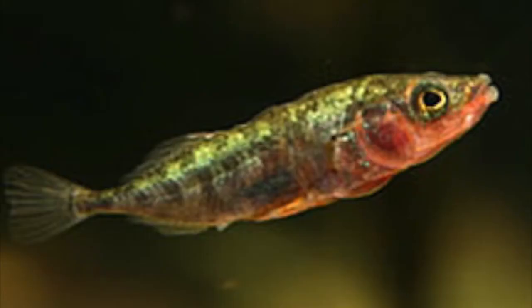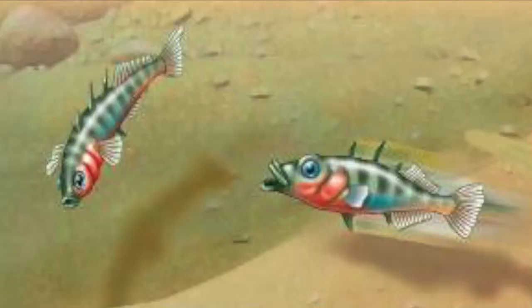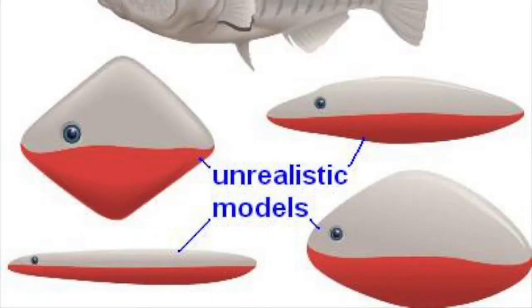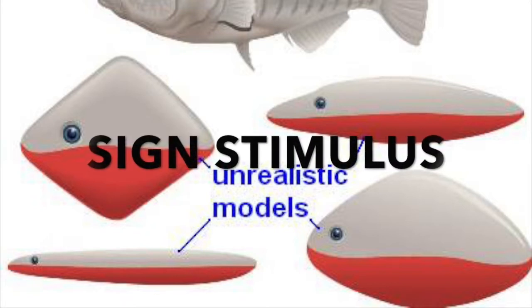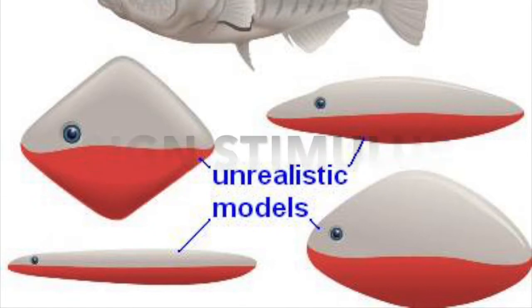Whenever one of these male sticklebacks sees another male coming into its territory, the red underbelly of the other male will trigger it to attack. Even if there's just a piece of wood with a bit of red, the stickleback will attack it. The color red in this situation would be the sign stimulus, which is something that initiates a fixed action pattern.